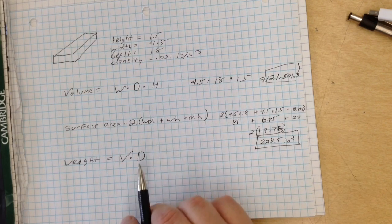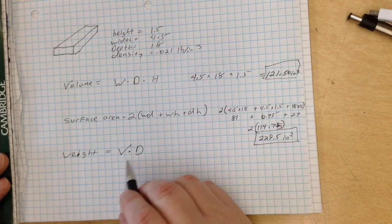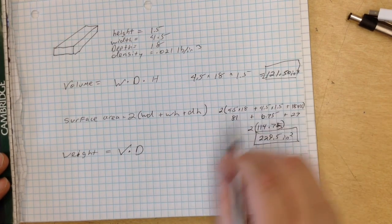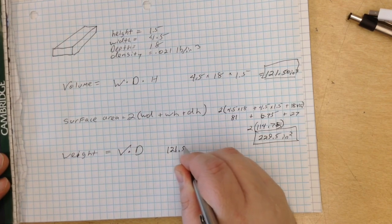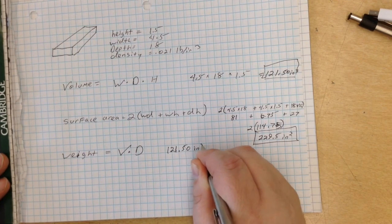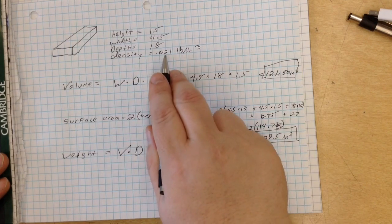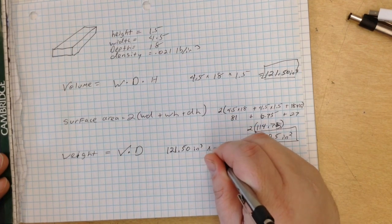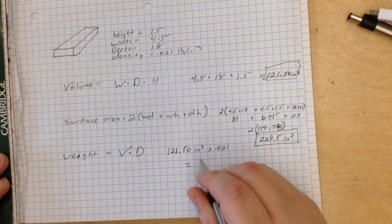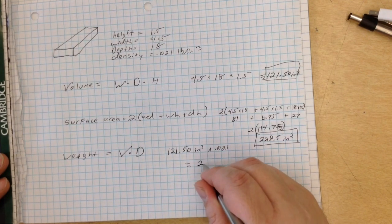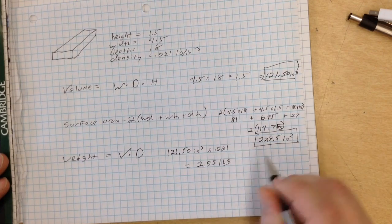Now we need to figure out the weight of it, and the weight is just the volume times the density. We've previously figured out the volume, which is 121.50 inches cubed, and we know the density is 0.021. So times 0.021, and when we multiply those together, we are given 2.55 pounds, the actual weight.